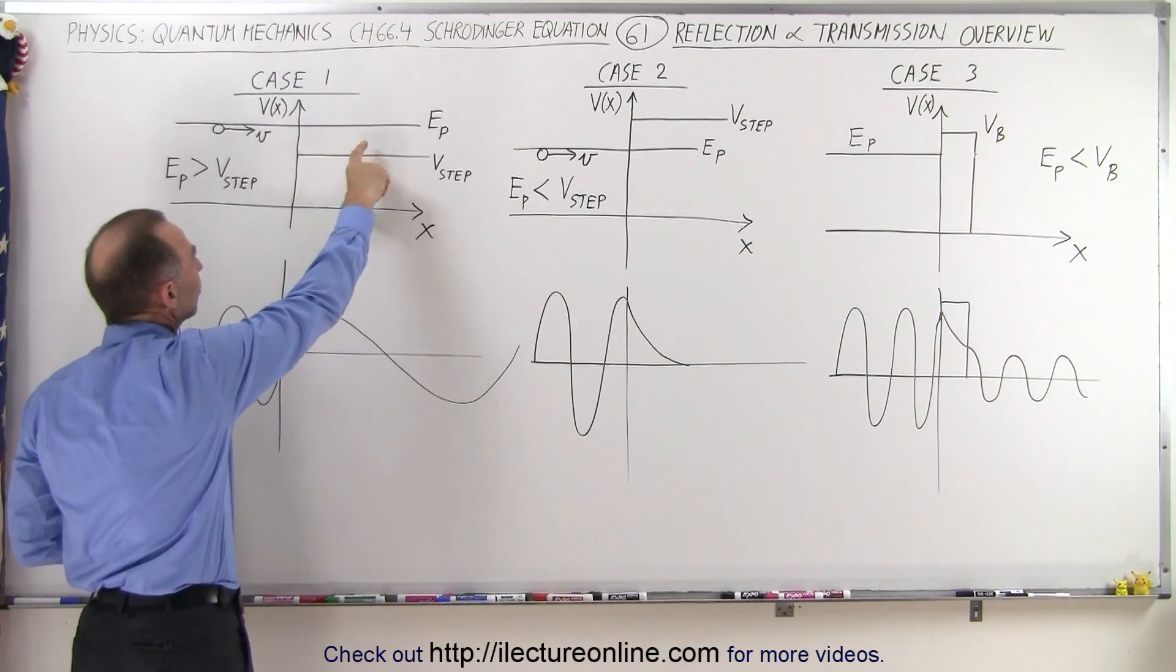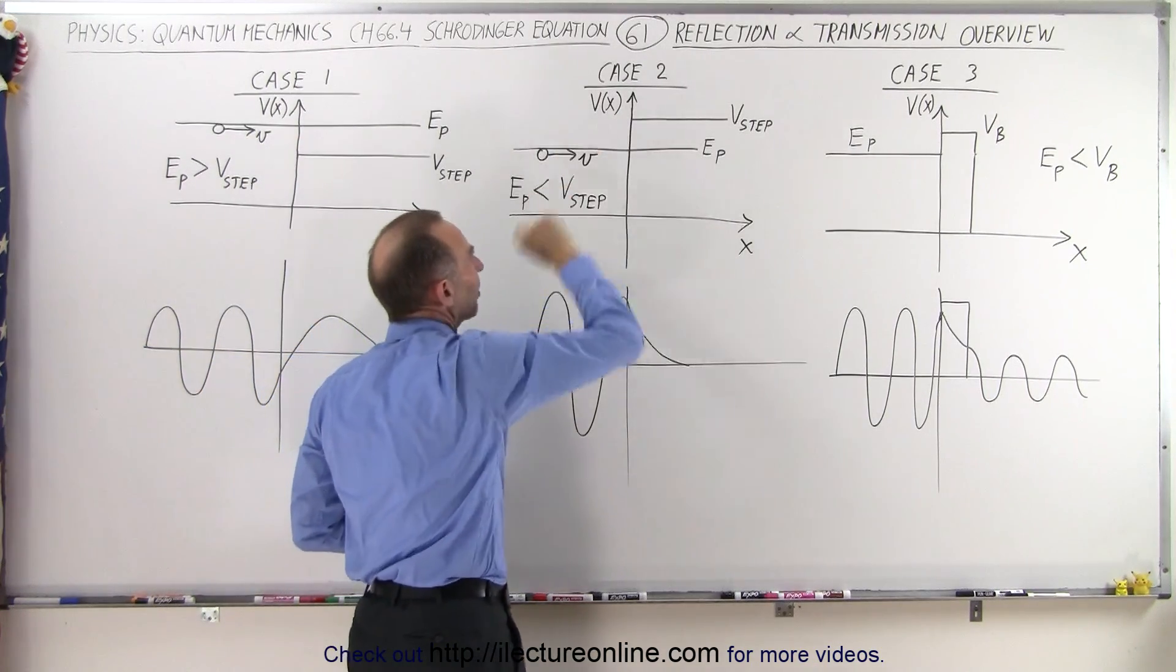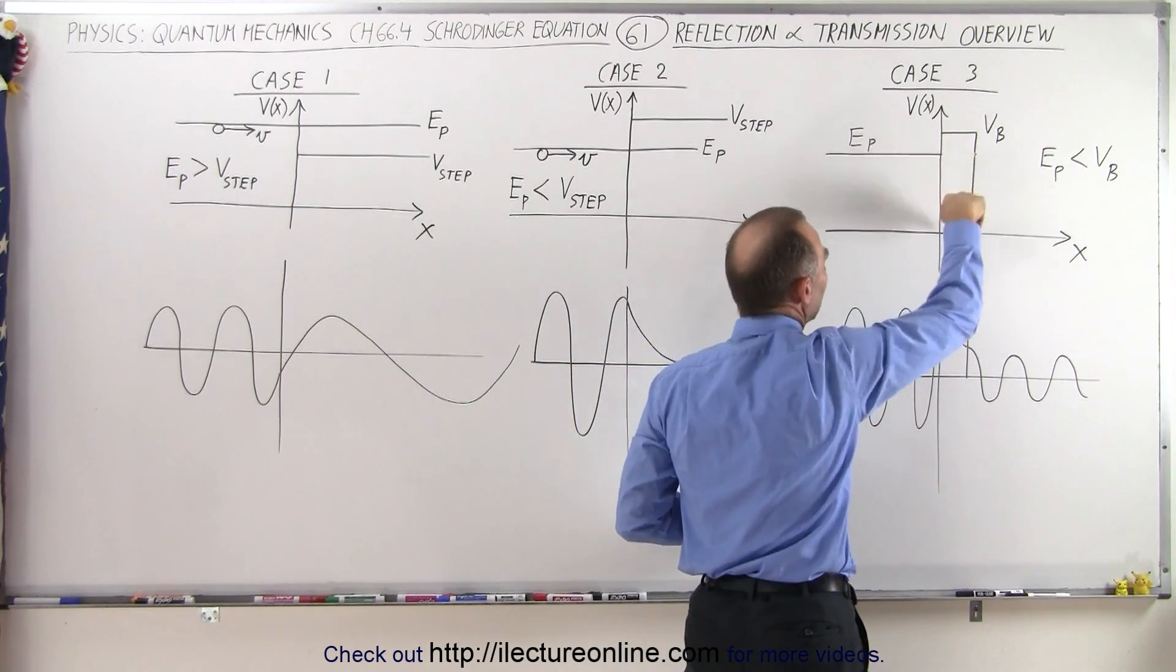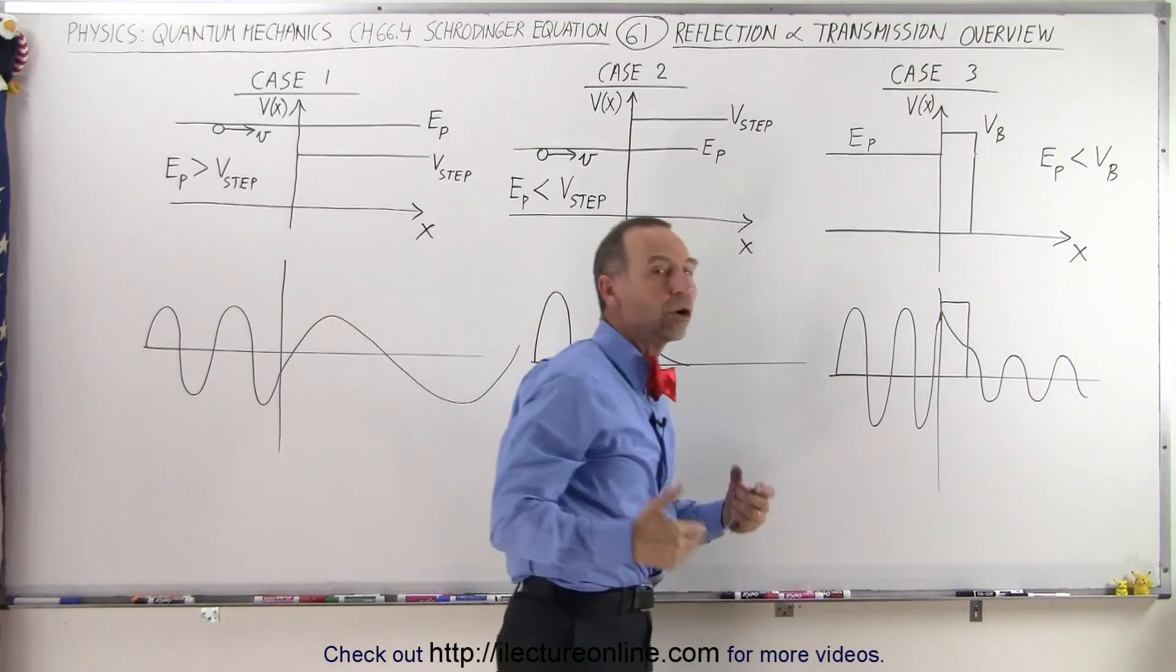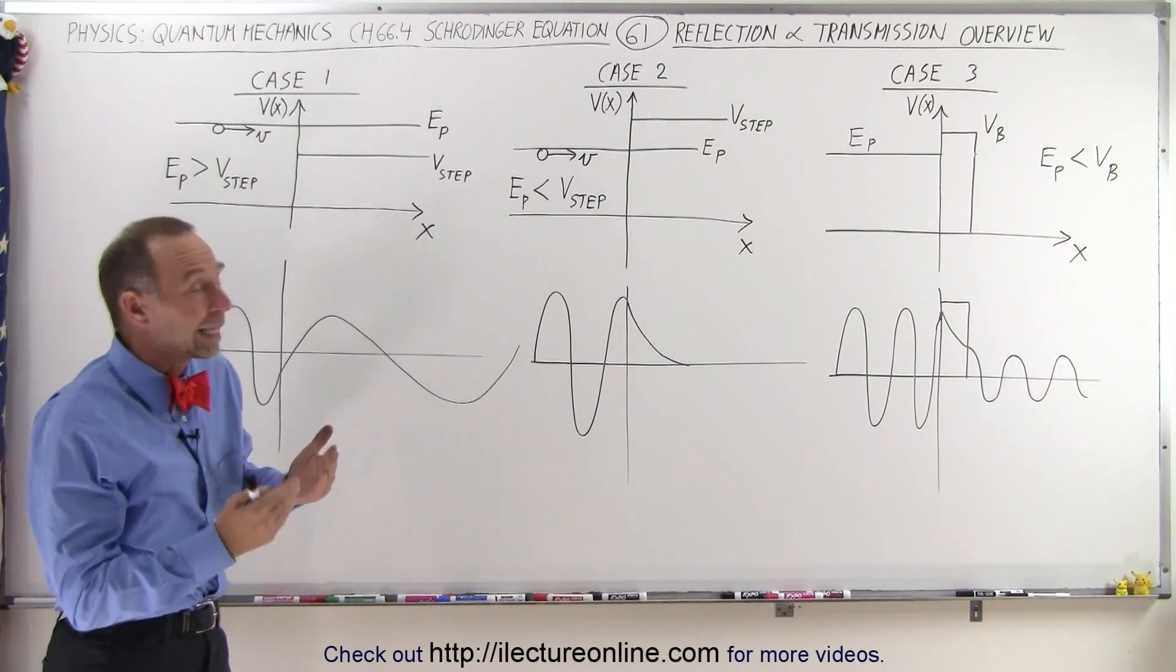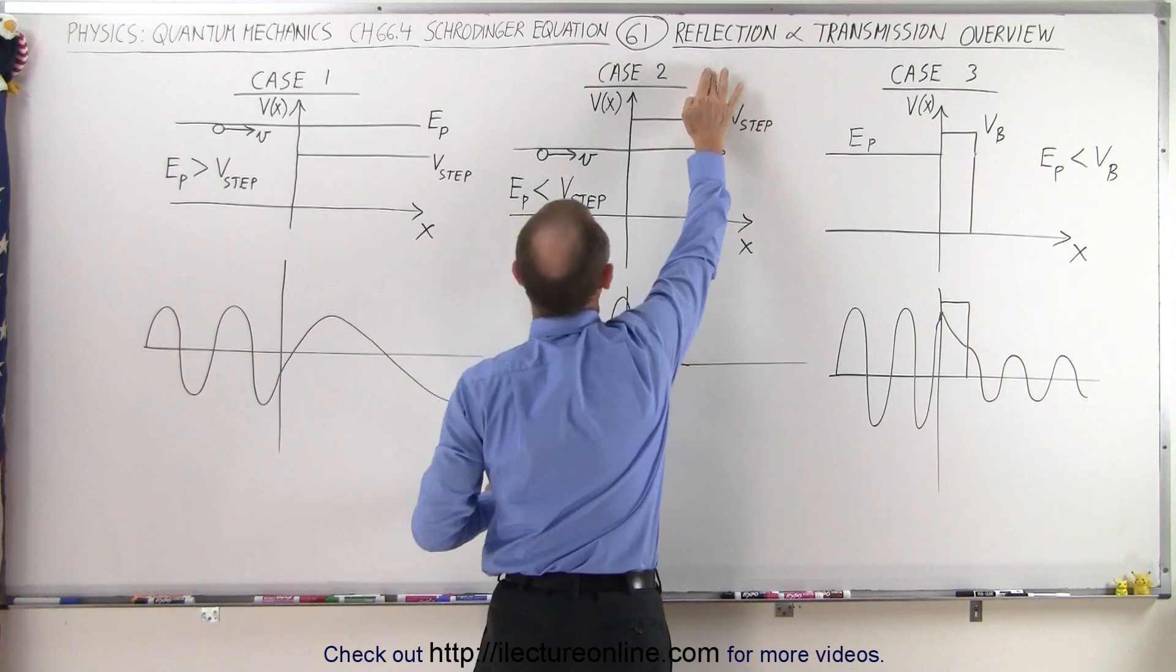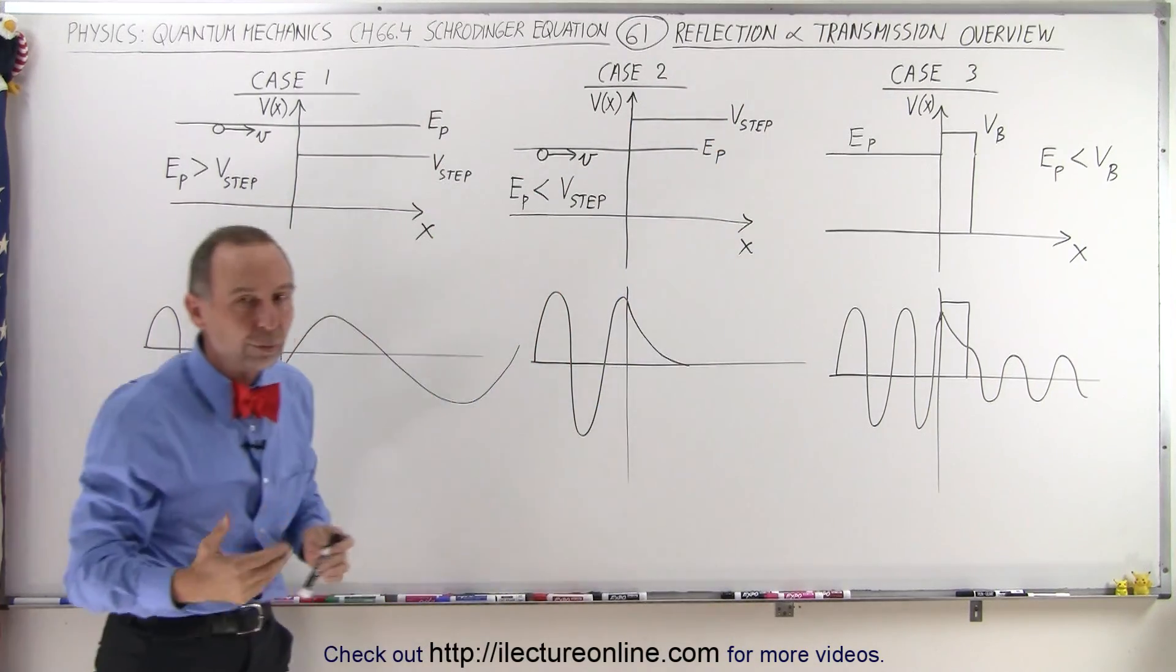in these various cases, where the energy is greater than the potential of the step, where the energy of the particle is less than the potential of the step, and where the energy of the particle is smaller than the potential of the barrier. But if it's of a finite width, it could potentially tunnel through that barrier, and so you'll see some activity on the other side. In either case, in each case, we're going to figure out how to calculate the reflection and the transmission, which will be possible in all three cases.